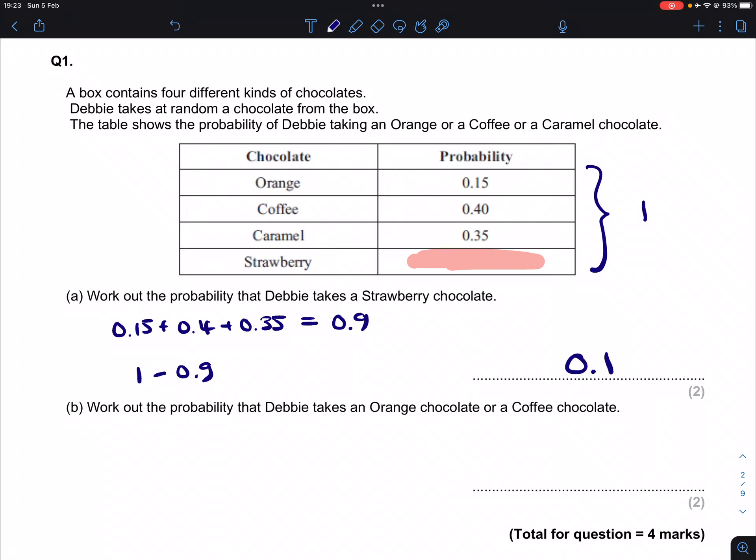Part B: work out the probability that Debbie takes an orange chocolate or a coffee chocolate. So that means that we want to have this or this.